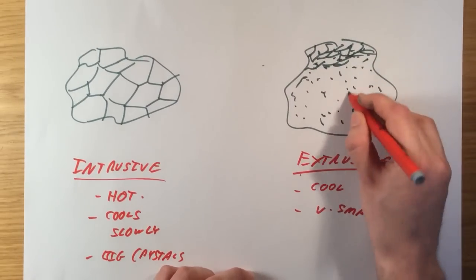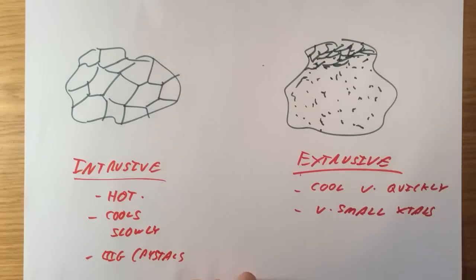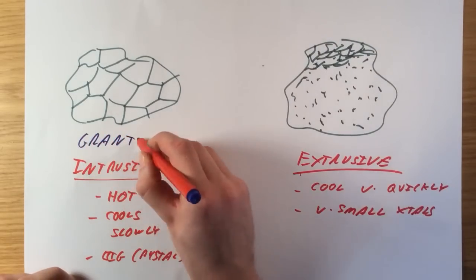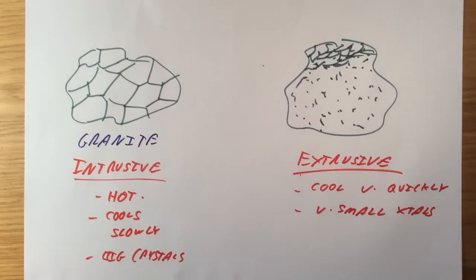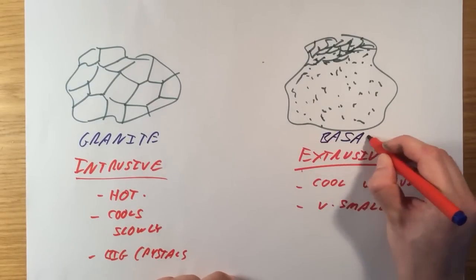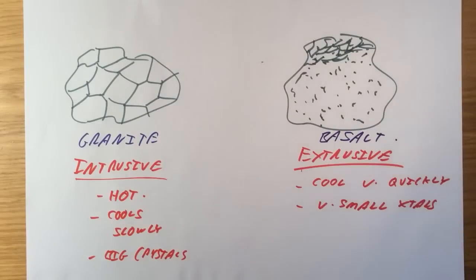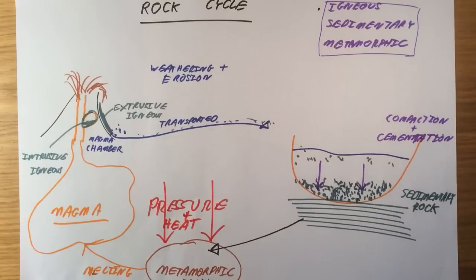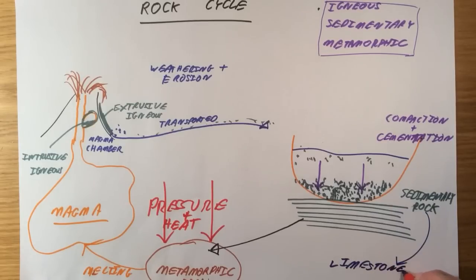Two examples of these types of rocks. An intrusive rock with nice big crystals, you might have something like granite. For an extrusive rock, you might have something like basalt or pumice. If we flip back to our rock cycle, sedimentary rocks that you might know about, things like limestone and chalk.